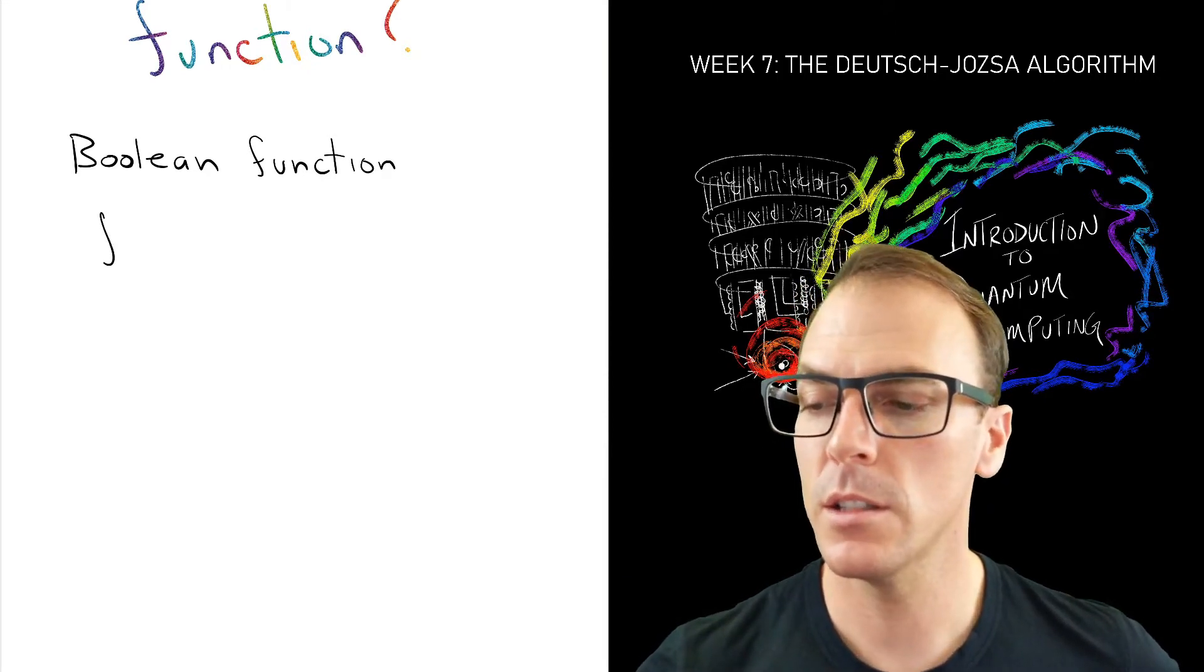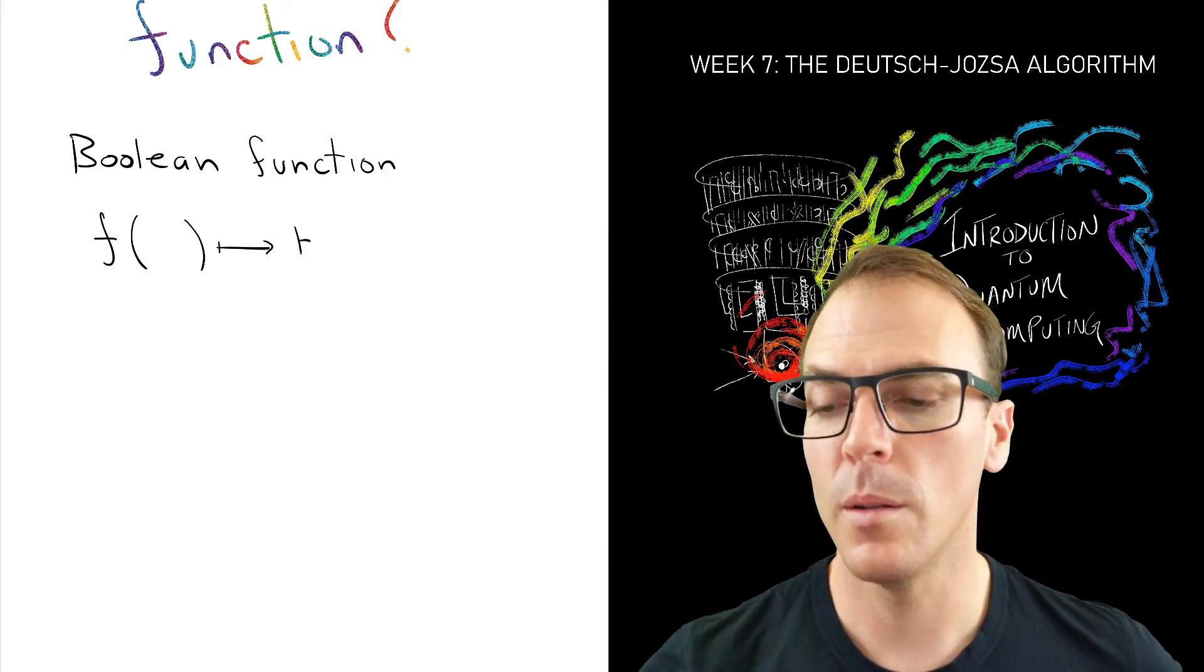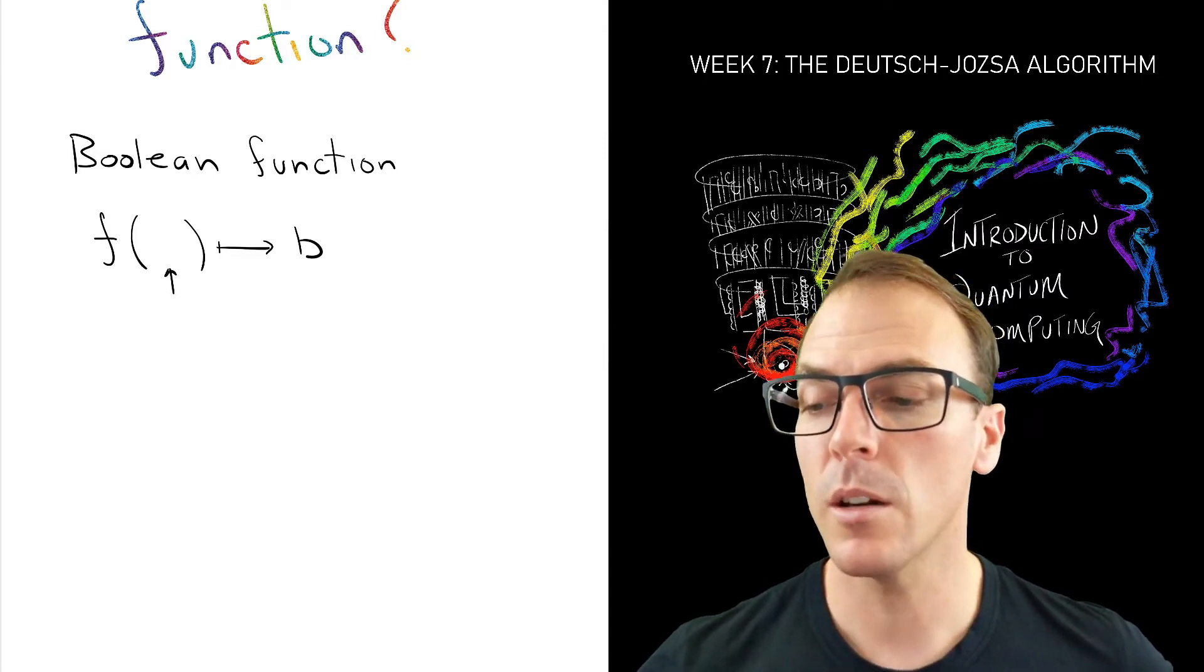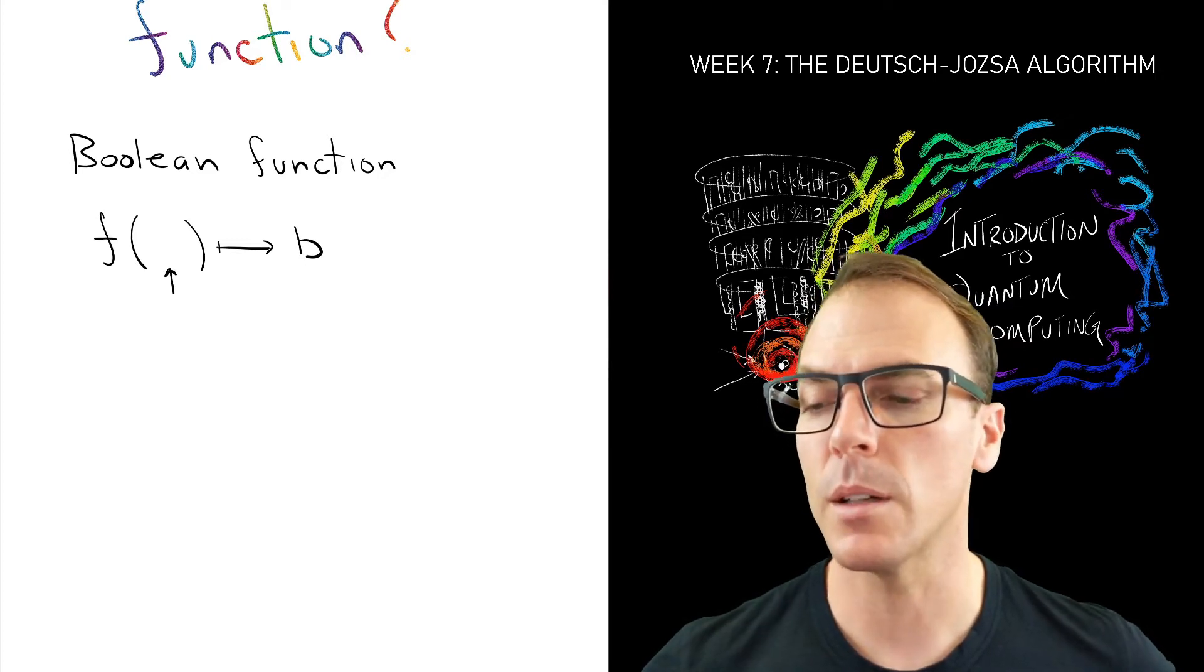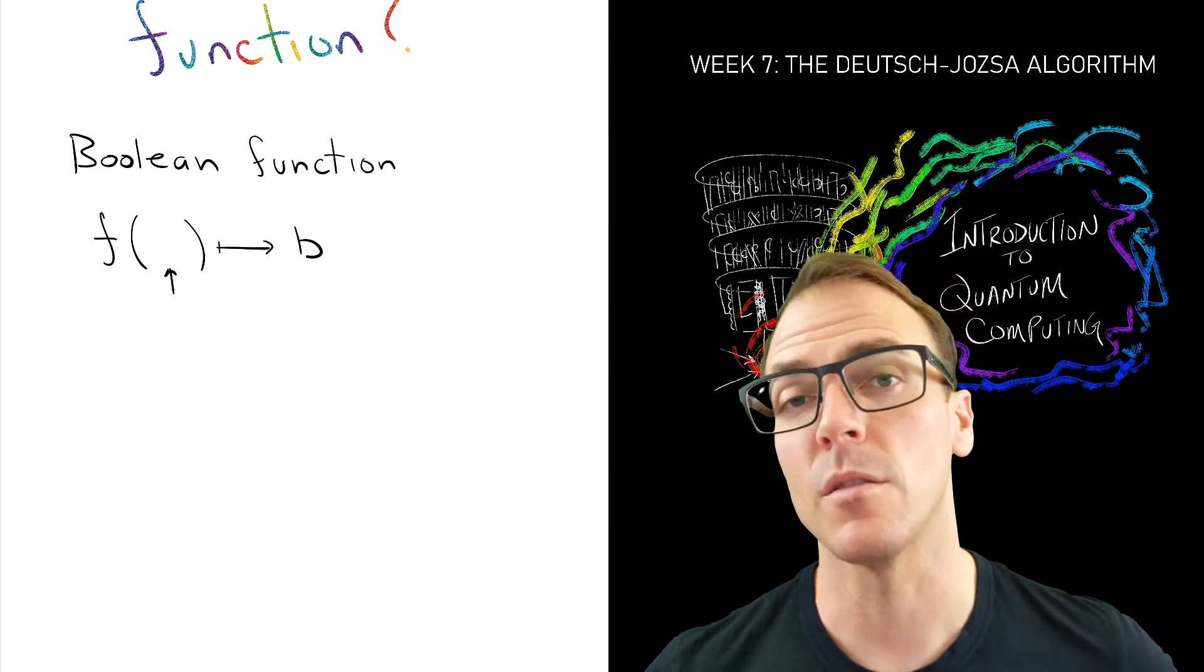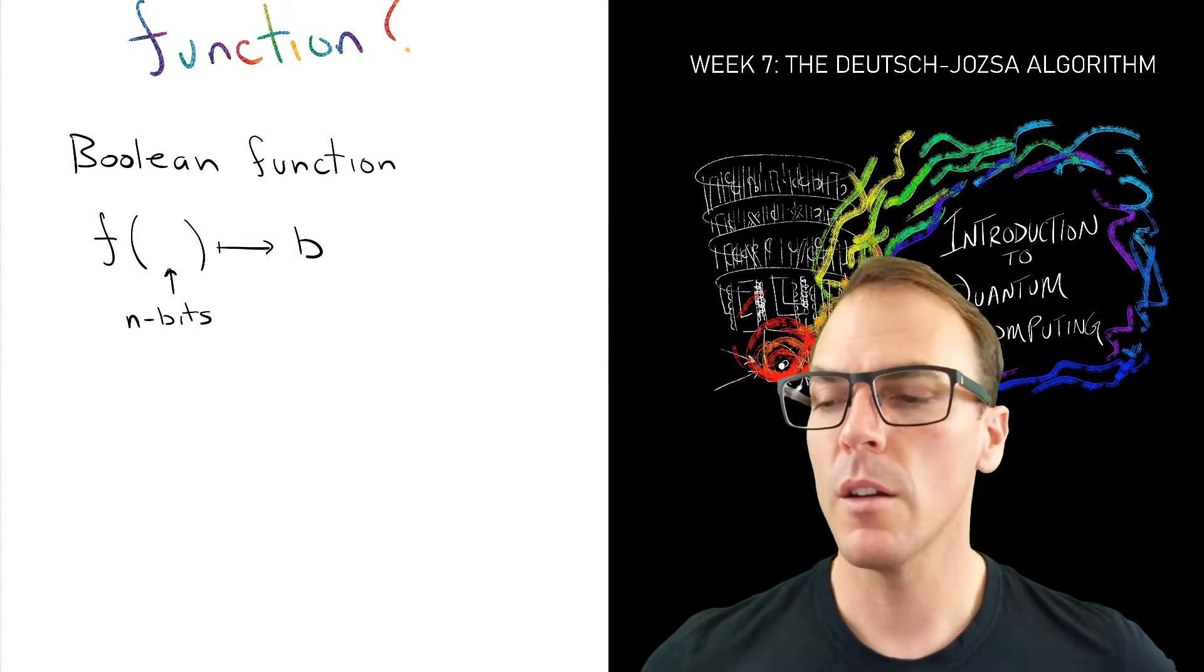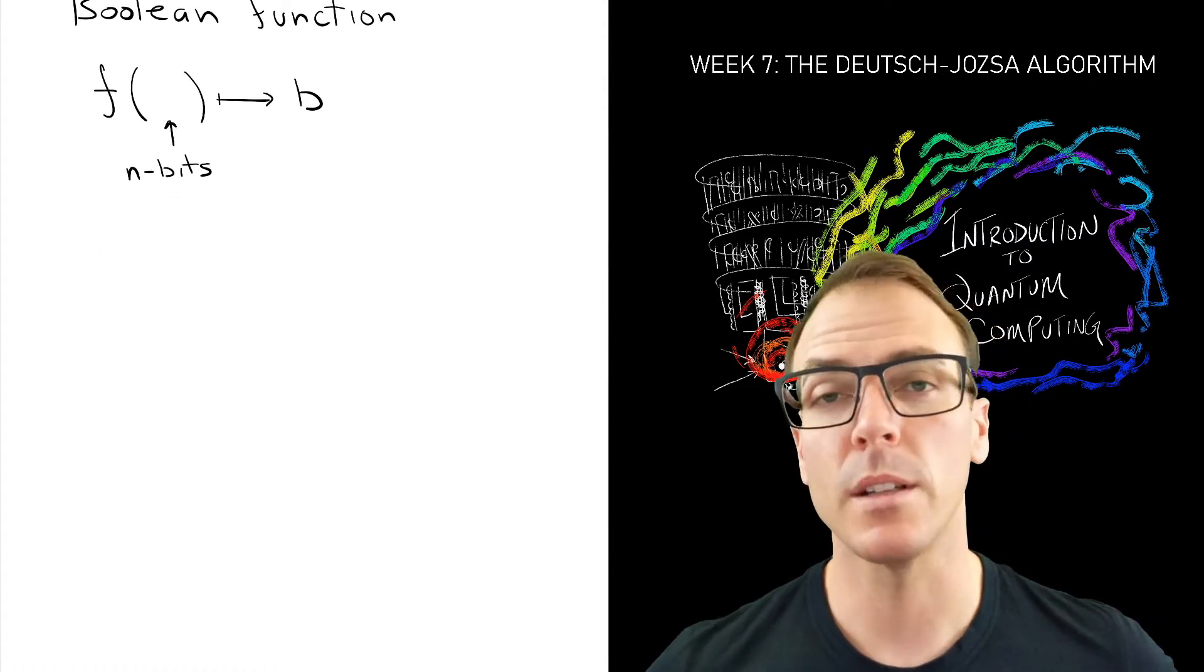And what can go in here can typically be anything, but we'll consider other sequences of bits. So this would be in general n bits go into here. You could have one bit, or two bits, or any number of bits. So as an example, let's look at a one bit function.